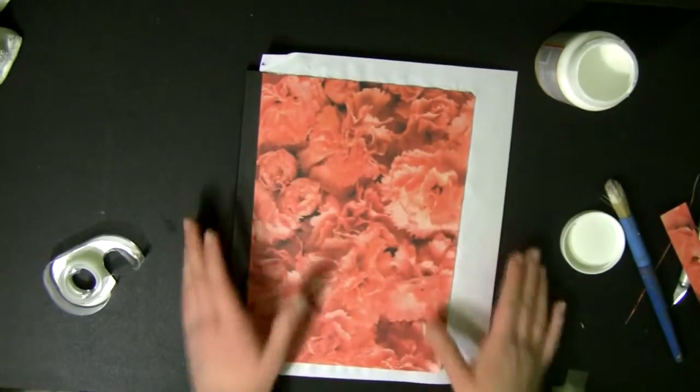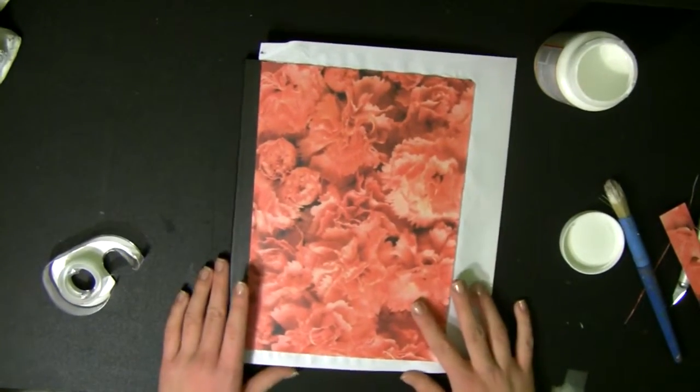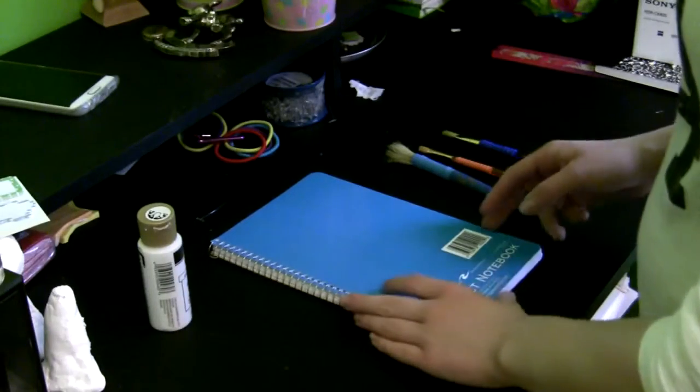All you have to do now is coat it in one final layer of Mod Podge. And the technique is exactly the same for spiral notebooks, just on the spirals.